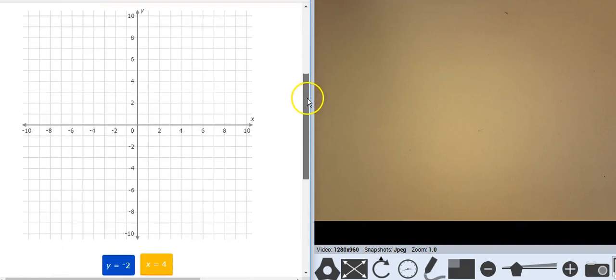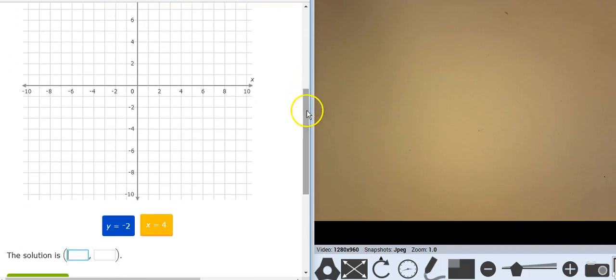So let's graph these two lines. I'm going to start with y equals negative 2, which is right here. x equals 4, which is right here, vertical line. And where do they come together? Well, they come together right here at 4, negative 2.